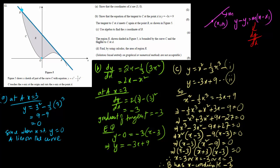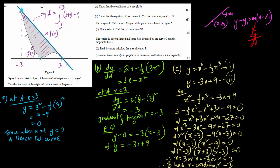Next, we have to find the area of the shaded region shown in the figure, bounded by the curve and the tangent. This is a finite region bounded by a line and a curve. To find the area, the limits run from point B (minus 3) to point A (plus 3). We take the upper function (the tangent line, f(x)) minus the lower function (the curve, g(x)) and integrate: the area equals the integral from minus 3 to 3 of (minus 3x plus 9) minus (x squared minus one-third x cubed) dx.